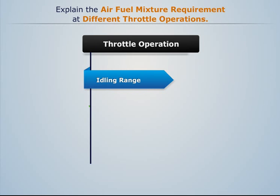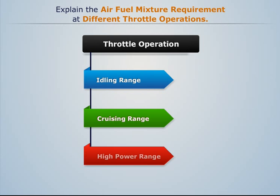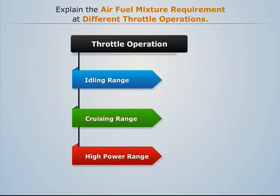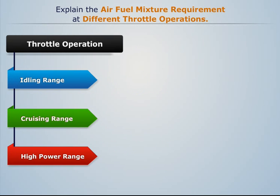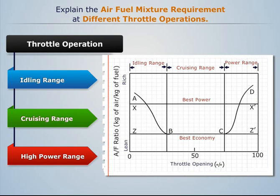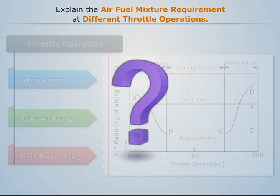Idling, cruising, and high power range. The graph of air-fuel ratio versus throttle opening can be drawn accordingly. Now let's try to understand why different air-fuel ratios are required under different ranges of throttle operations.